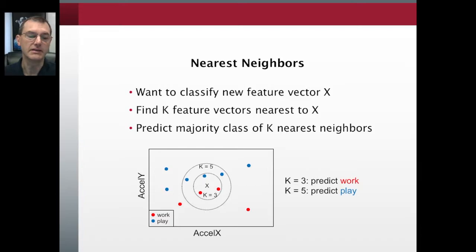In this picture, we have several examples of work and play. Blue dots are previous examples of play, red dots for work. We receive this new feature vector x, and want to know should we classify it as work or play. If k is 3, we look at the three nearest neighbors. We'd see two examples of work and one of play. So if k were 3, we would predict work.